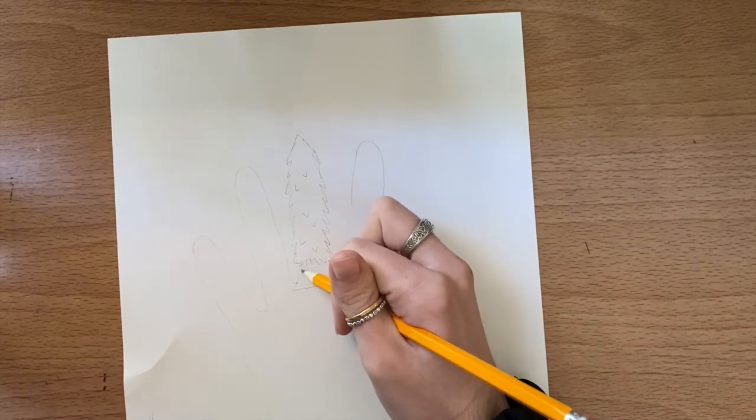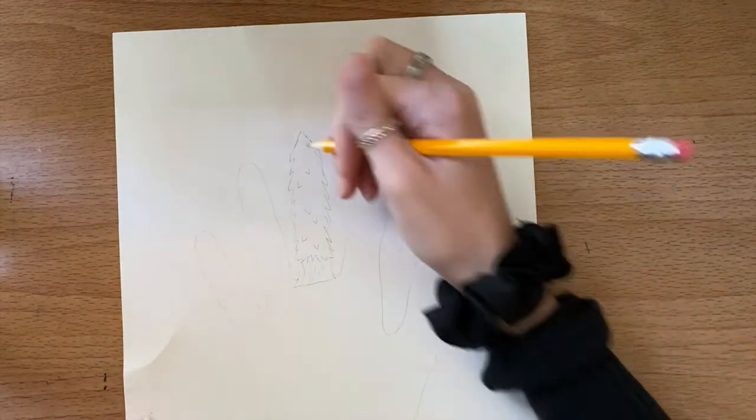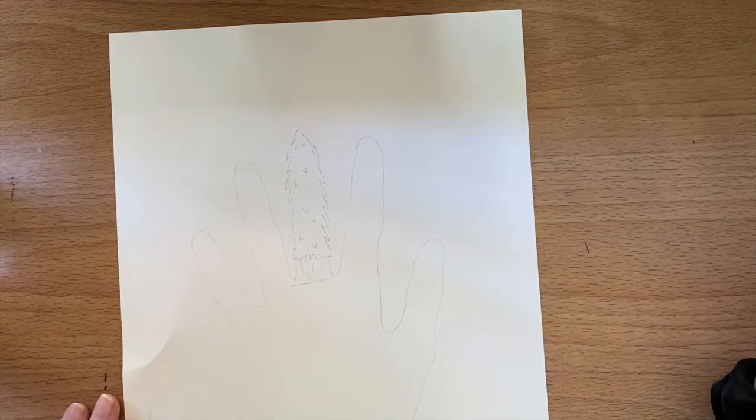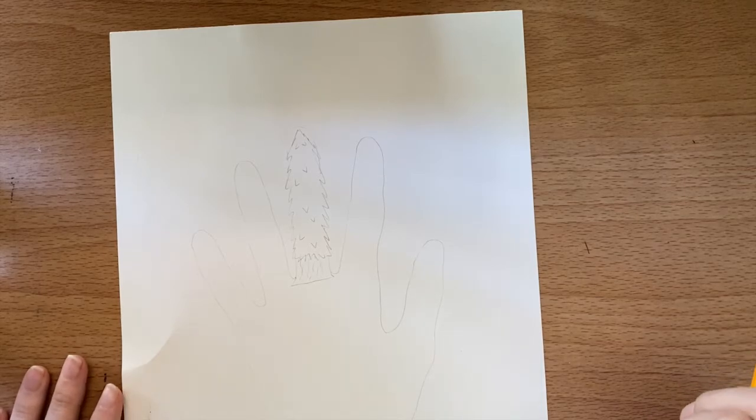So basically, you're using the same general shape. You can still see that it's kind of long. It's still about the same amount from side to side. But it doesn't look like a finger anymore. It looks like a tree. I'm going to do that with all five fingers. Come up with something different for everything.